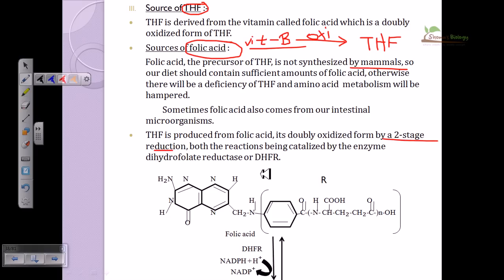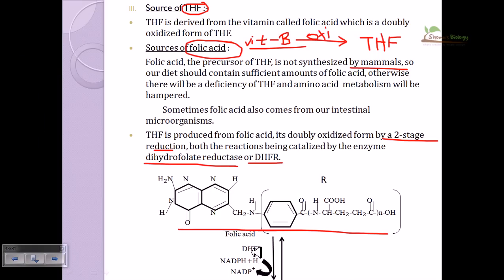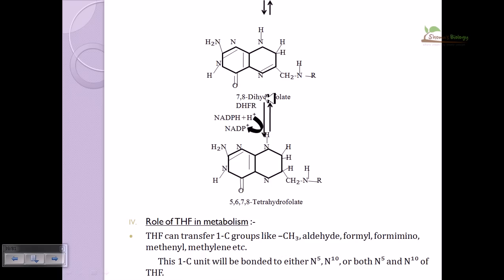With the help of the enzyme DHFR — dihydrofolate reductase — we can make tetrahydrofolate from folic acid. This reductase enzyme oxidizes NADPH into NAD+, first converting folic acid into 7,8-dihydrofolate, and then dihydrofolate is converted into tetrahydrofolate. So the hydrogenation occurs at positions 5, 6, 7, and 8, whereas previously it was only at 7 and 8.